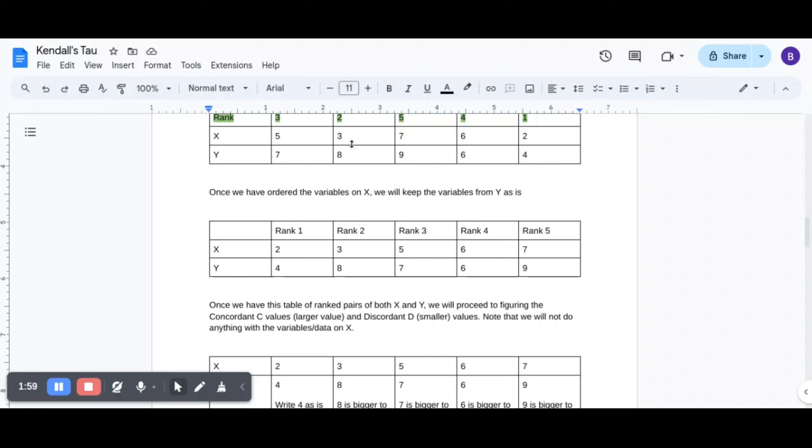When I ranked 3 as 2, my corresponding value on Y was 8. So I maintain here 3 and 8. And this is the process I followed for all of these values.